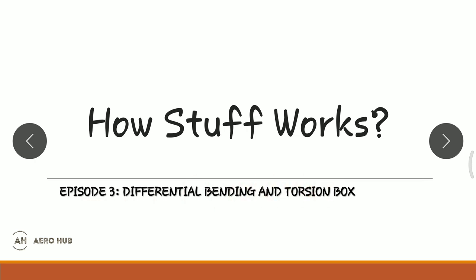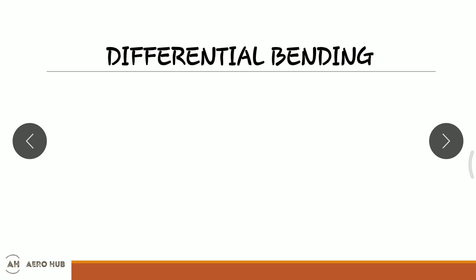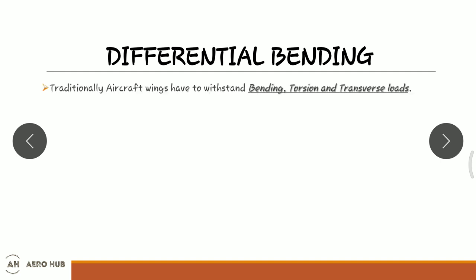Hello everyone, welcome back. Today we will discuss differential bending and torsion box. For an aircraft wing, it should withstand bending, torsion, and transverse loads. Bending is mainly due to the distribution of lift load or pressure load; torsion is due to the movement of control surfaces and pitching and rolling moments.